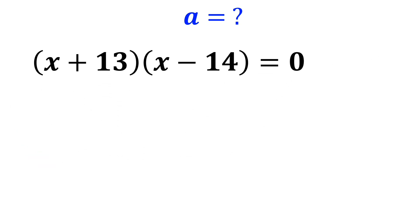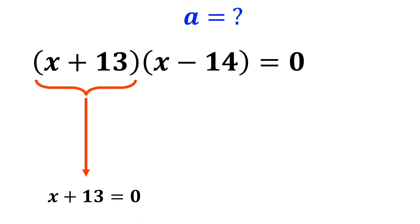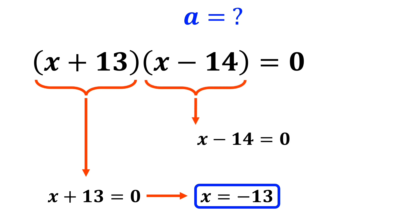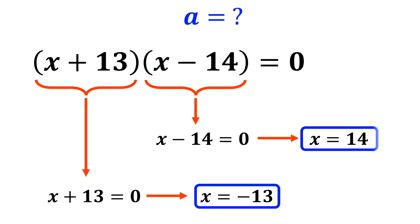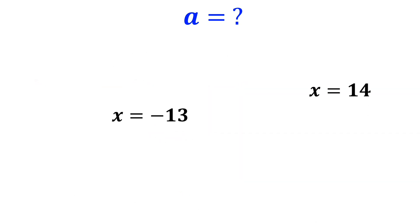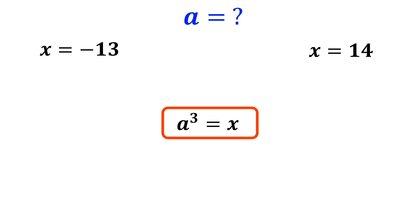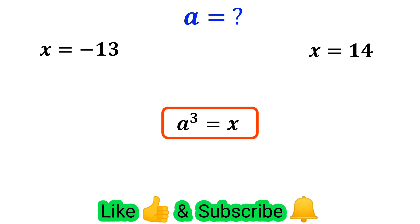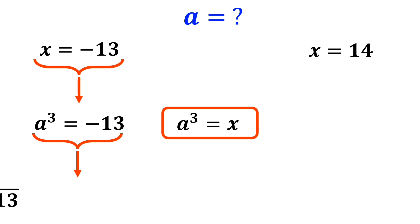Alright, we have two expressions that must equal 0. First, we set x plus 13 equal to 0, which gives us x equals negative 13. Then we set x minus 14 equal to 0, which gives us x equals 14. Now, according to our assumption, a cubed is equal to x. So instead of this expression, we can write a cubed equals negative 13, and finally a equals the cube root of negative 13.